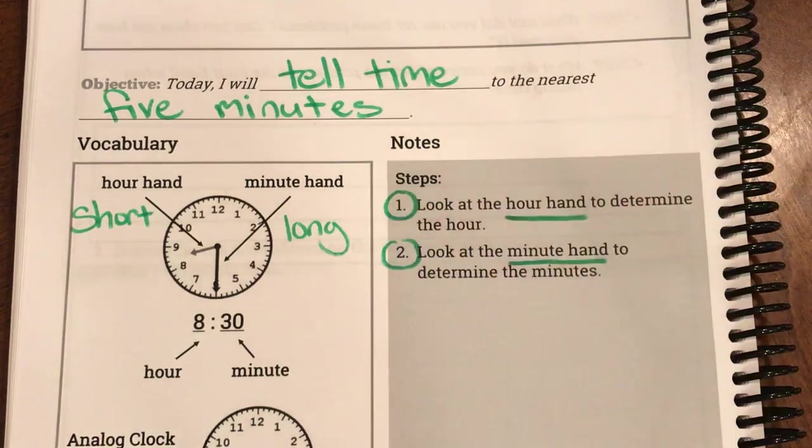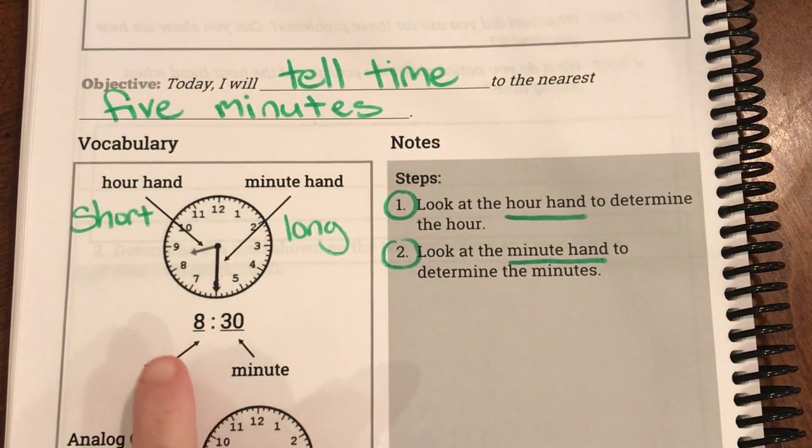And then it says we're going to look at the minute hand to determine the minutes. So second we look at the minute hand. And we always write it with the hour hand first, the hour first too.